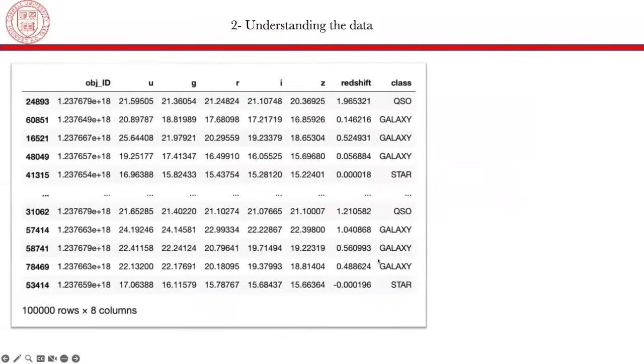And here is how our data looks like. So we have a column that represents the object ID. Then we have five columns that represent the values of the different filters, U, G, R, I, and Z. And we have the redshift value. And finally, we have the column that represents the class of the object. The SDSS contains hundreds of millions of data. However, for the sake of this project, we will use a subset of 100,000 data.